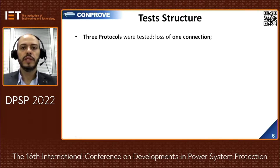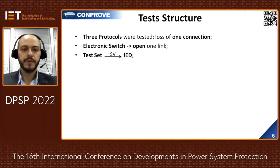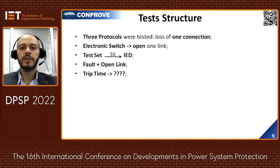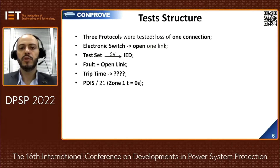The three protocols were tested considering the contingencies of link loss. The electronic switch opened the communication path, the test set published the sampled values, and the IED subscribed to them. The faults were injected at the same moment the link was opened, and the IED trip times were verified when this communication loss occurred in each redundancy protocol.